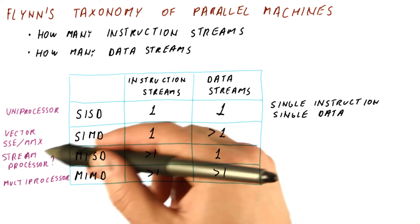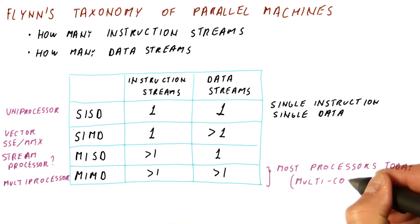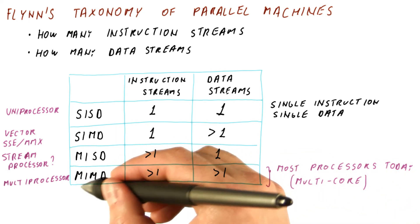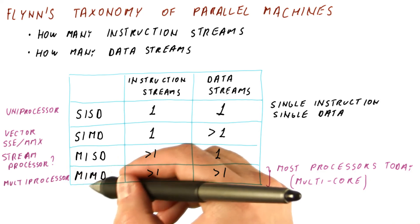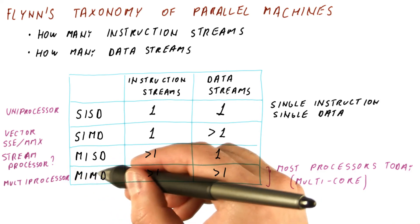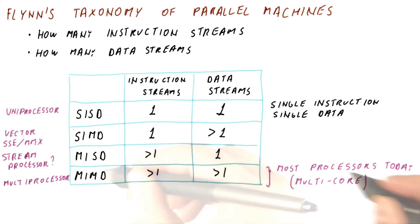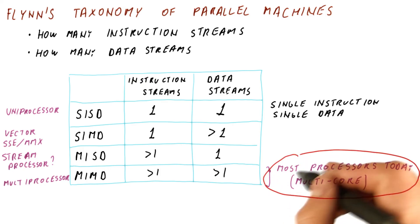This type of processor really includes most of the processors you can buy today, because most processors today are multi-core, which means they have several processor cores, each of which executes its own instruction stream and can access data independently, so it has multiple data streams. This lesson is mostly about this type of machine.